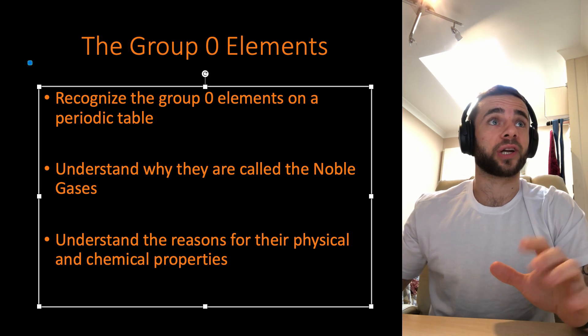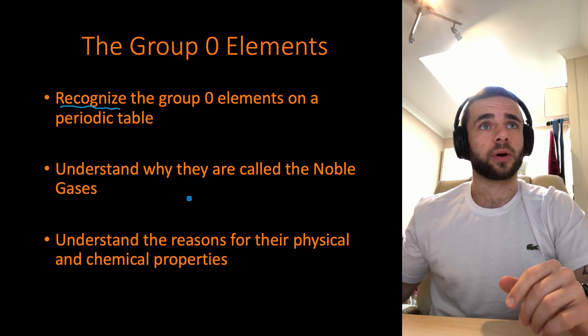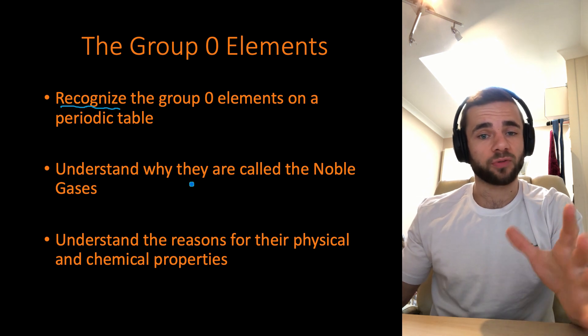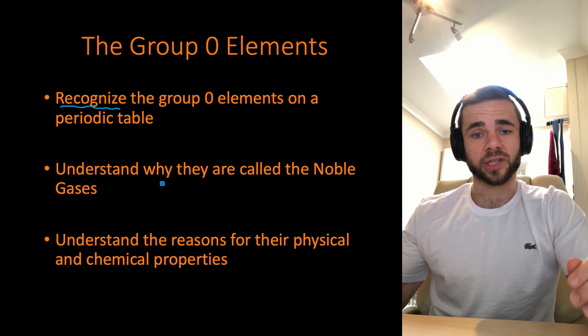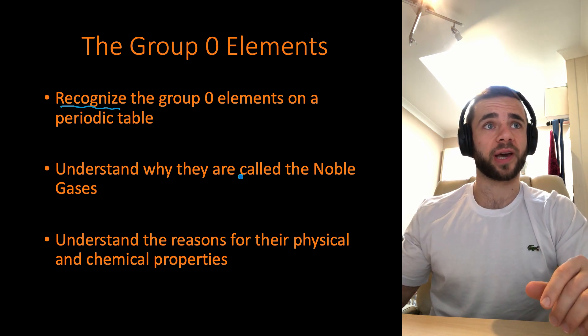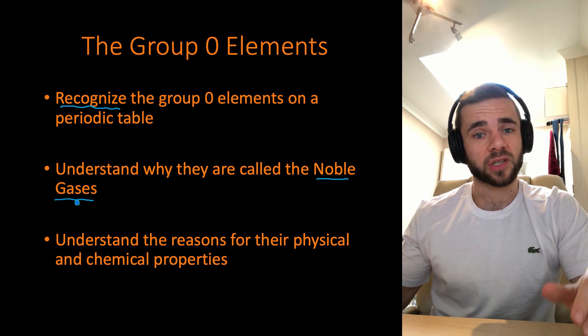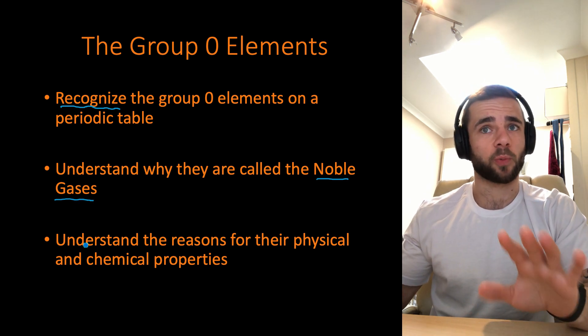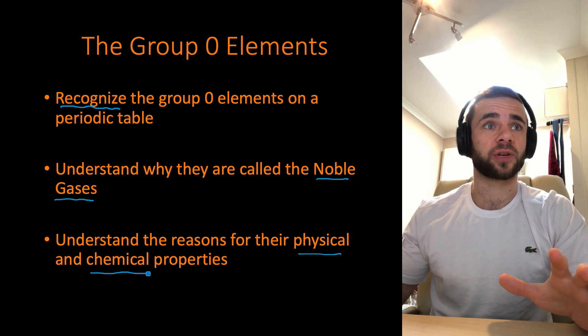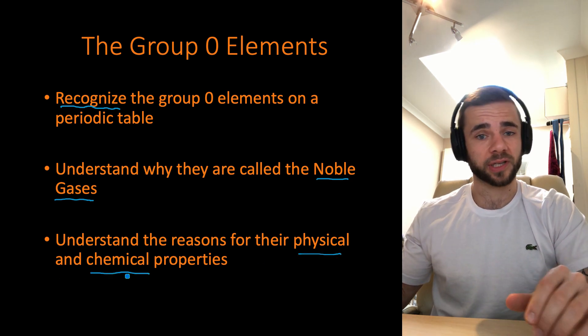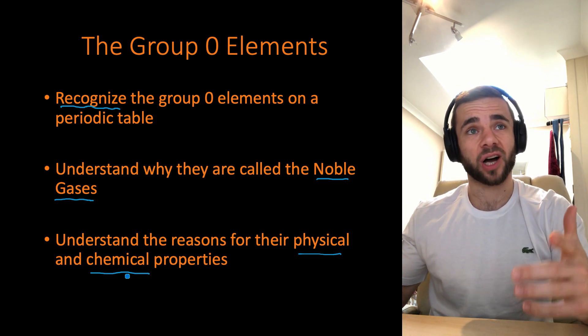What you're going to need to be able to do is to recognize the group zero elements on a periodic table. You need to be able to find them and say which ones they are. You also need to understand why they are called noble gases. Finally, you need to understand the reasons for their physical and chemical properties. Make sure that you can do both, as physical properties and chemical properties are different.